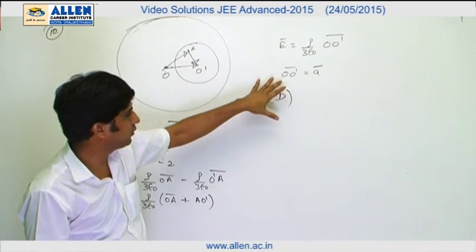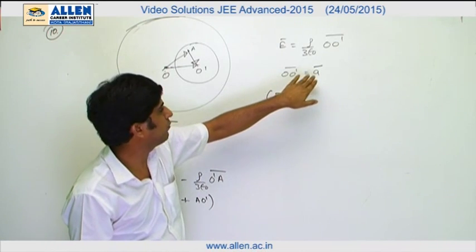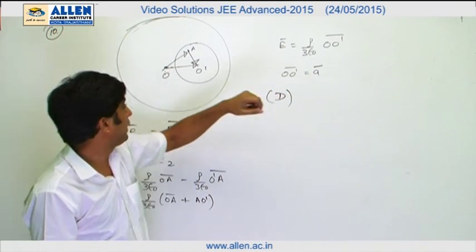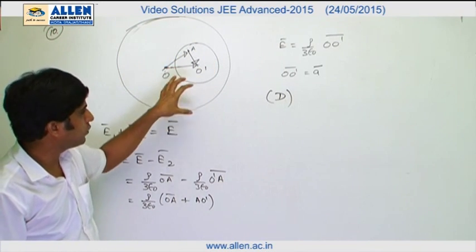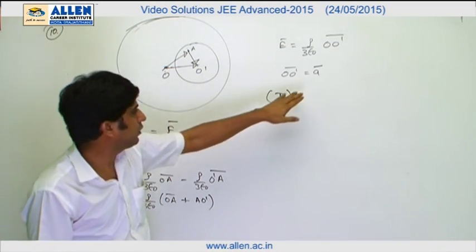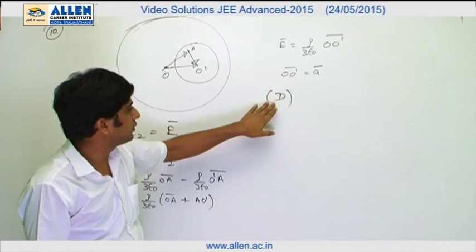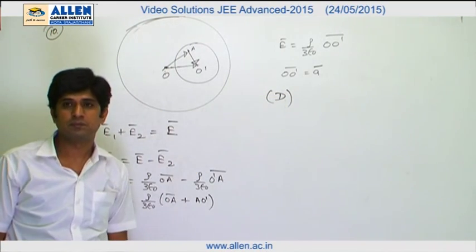According to the question, vector OO' is the vector A. Therefore, electric field intensity inside the cavity in magnitude as well as in direction depends on A. Therefore, the correct answer is D.